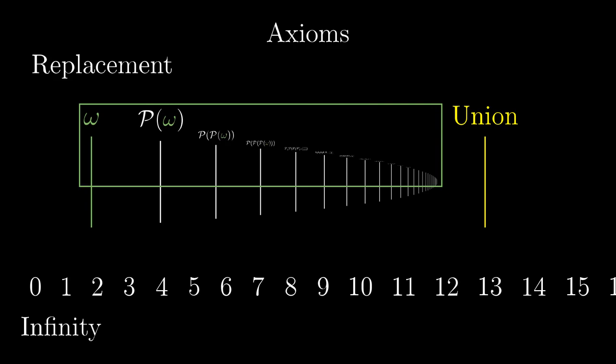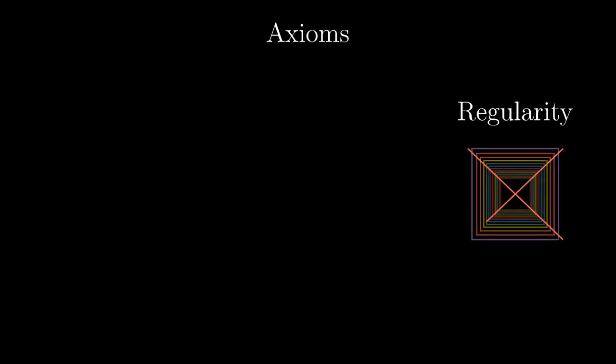Then there are two more advanced axioms. The axiom of regularity guarantees that there are no weird sets. This axiom is not too important and we can build the entire set theory without it. And then there is the axiom of choice which will be covered in this video.